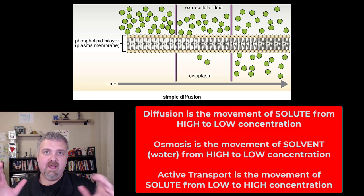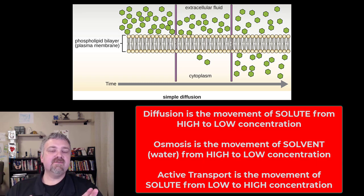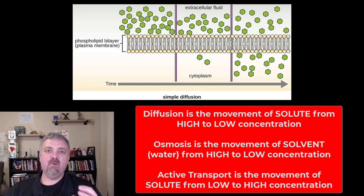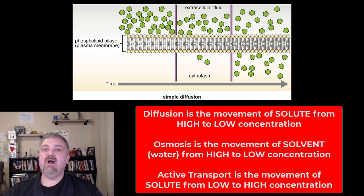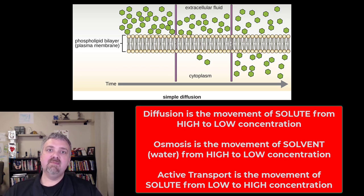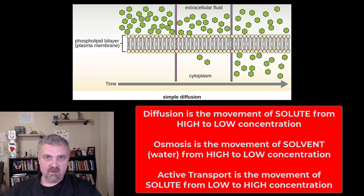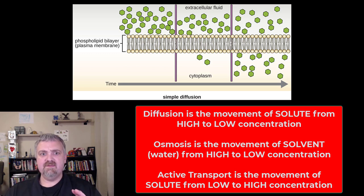Hey everybody, Dr. O here. This is the first video of several videos where I'm going to talk about the ways that things move into and out of cells. The three key things we're going to talk about are diffusion, osmosis, and active transport. We'll cover some more things, but we're just going to cover diffusion really in this video.